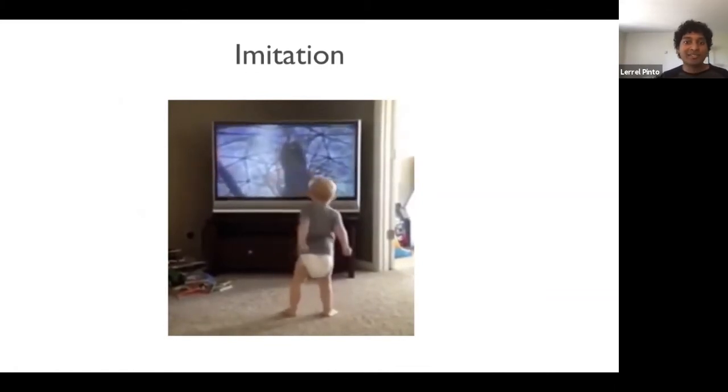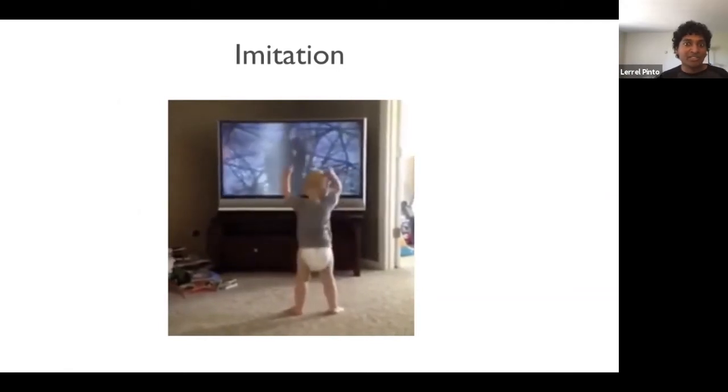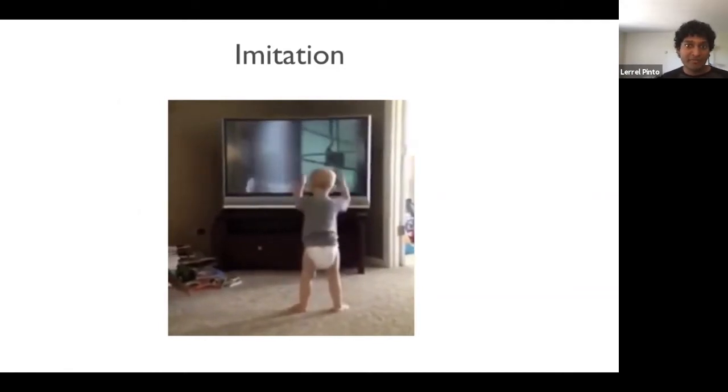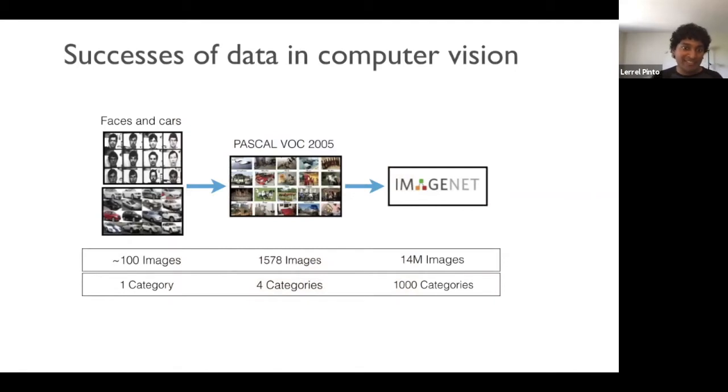Before we use imitation learning in robotics, a key question to ask is how much data do we actually need for imitation? In computer vision, what we have seen is that we started off with very small amounts of data. So, for instance, in the initial faces and cars datasets, we only had a few hundred images. But then over time, we kept increasing the amount of data. So in Pascal VOC, we had a thousand images, and then in ImageNet, we have now millions of images. And along with this increase of data, the performance of our vision models have also continuously kept improving.